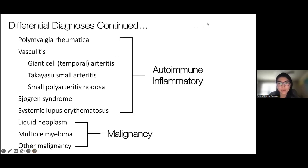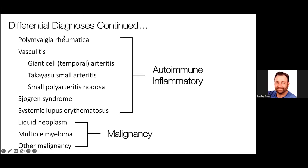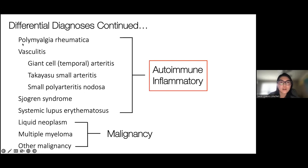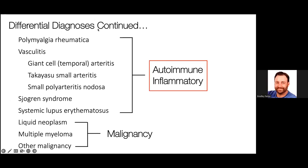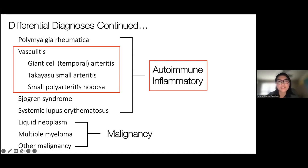Based on the PET scan, this pattern of vascular involvement suggests autoimmune/inflammatory process rather than malignancy — the distribution across vessels is not consistent with a tumor spreading that way. Since it's mainly affecting the vascular system, we're leaning toward a vasculitis of some sort rather than polymyalgia rheumatica, Sjögren's syndrome, or systemic lupus erythematosus.